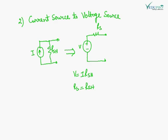We can also convert a current source to a voltage source. The magnitude of this voltage is given by I multiplied by Rsh, and the value of the series resistance Rs in the new circuit is equal to Rsh.